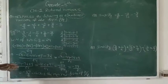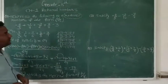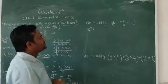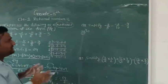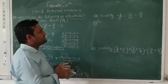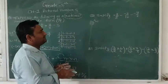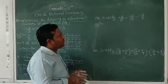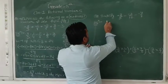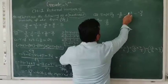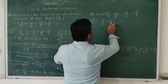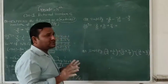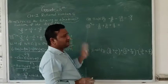Let us solve the next question. Question 2 is: Simplify. The word 'simplify' has the same meaning — we check if there are parts involving addition and subtraction and solve accordingly. The expression is: 2 upon 5, minus 4 upon 5, plus 3 upon 10, plus 4 upon 7. The signs simplify: minus minus becomes plus, so we have 2 upon 5 minus 4 upon 5, plus 3 upon 10, plus 4 upon 7.